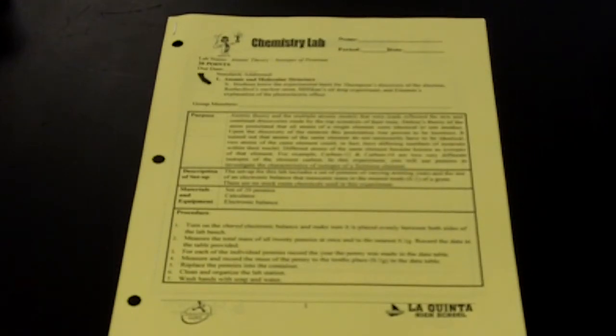In this experiment, you will use pennies to investigate the characteristics of isotopes of a fictitious element. The setup for this lab includes a set of pennies of varying minting years and the use of an electronic balance that measures mass to the nearest tenth of a gram. There are no stockroom chemicals used in this experiment.